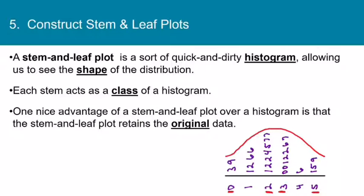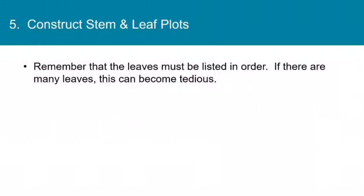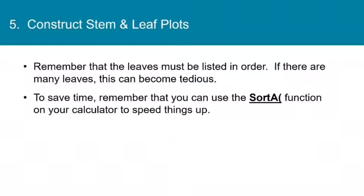One nice advantage of a stem and leaf plot over a histogram is that the stem and leaf plot retains the original data. Someone could still look at it and see that the original data contained a 21, a 22, another 22, and so on — you just can't do that with a histogram. Also, remember you can use the sort function on your calculator to speed up ordering the leaves.